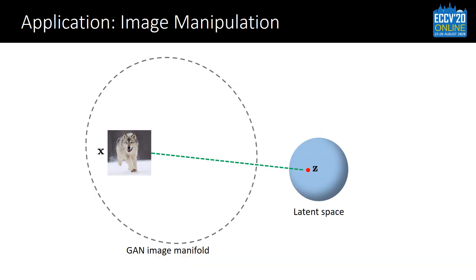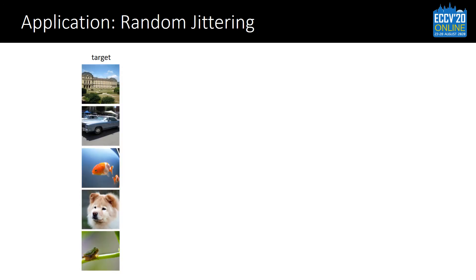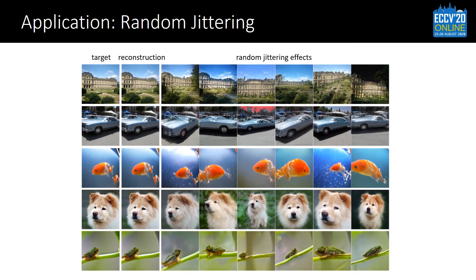As our improved GAN inversion method maps the target image to the GAN image manifold, it immediately allows image manipulation by shifting the latent vector in the latent space, which corresponds to manipulating the contents of the image. For example, after reconstructing the target image, we could add random noise to the latent vector to achieve random jittering effects. The image content would shift in diverse and reasonable ways.